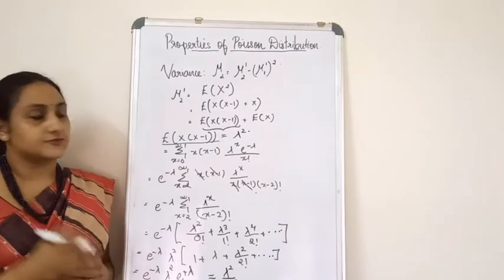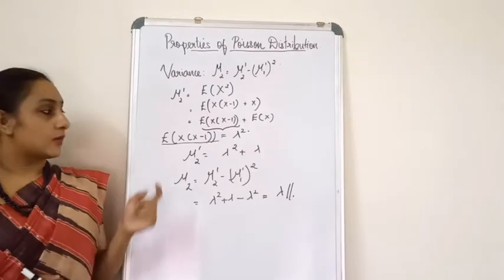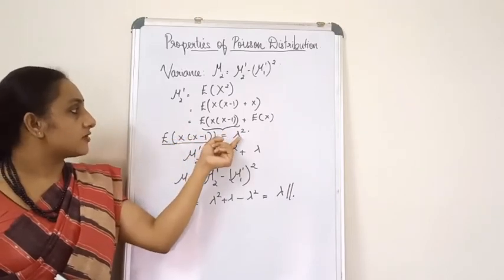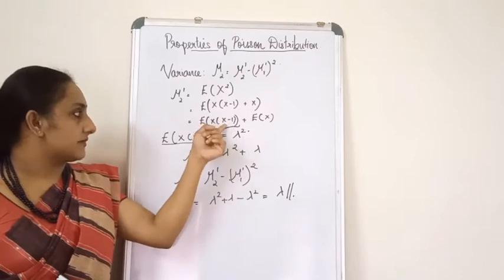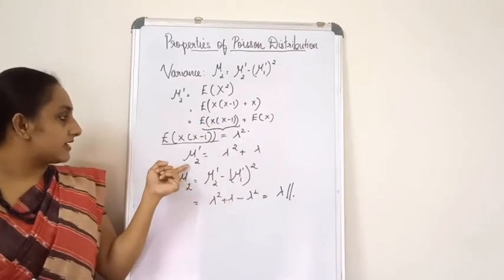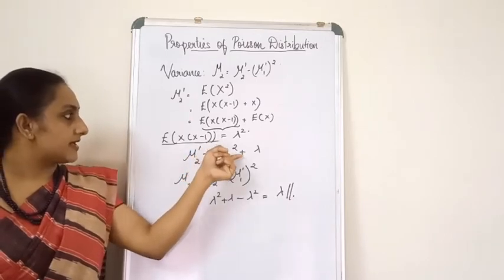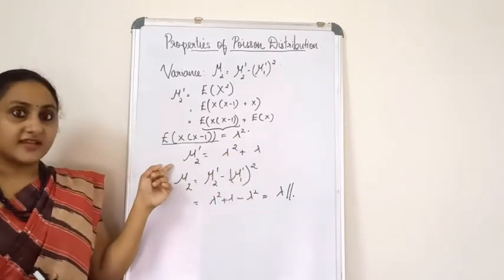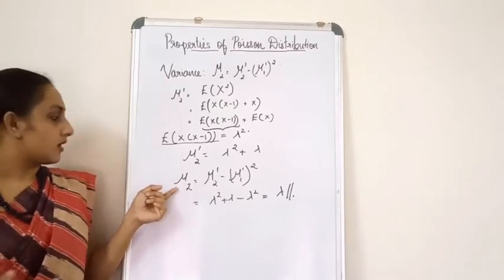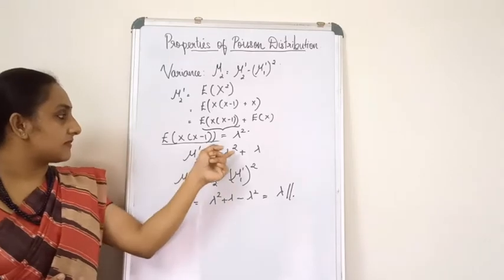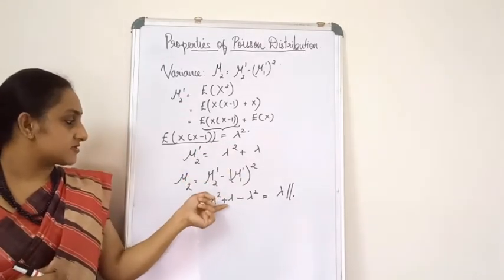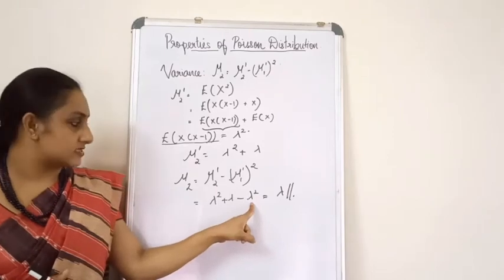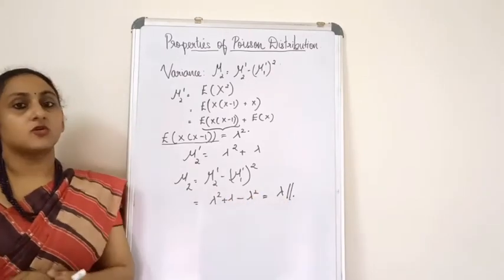Substituting back: μ₂' = E[X(X−1)] + E[X] = λ² + λ. Now applying the variance formula: μ₂ = μ₂' − (μ₁')² = (λ² + λ) − λ² = λ. The λ² terms cancel and the variance equals λ.